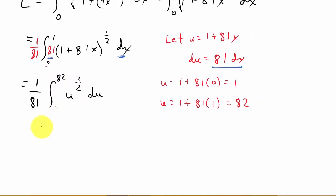And now I'm ready to integrate. So that's going to be 1 over 81. And then to integrate this, that's going to be u to the 3 halves. So I add 1, and then I multiply by the reciprocal. And that's from 1 to 82. And so that is going to be 2 over 243 u to the 3 halves from 1 to 82.